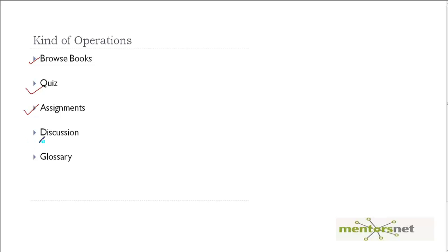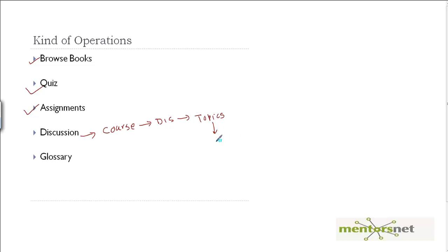In discussion, this is what we're going to do: we are going to go to a course, and in that course we will see a discussion forum. We go to the discussion forum and there will be multiple topics. We will choose a topic and then browse and read the content of that topic. This is the flow.